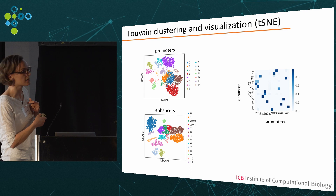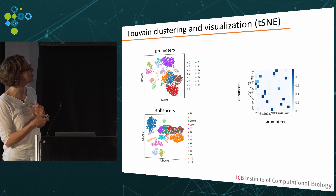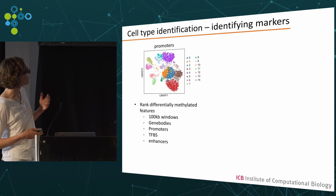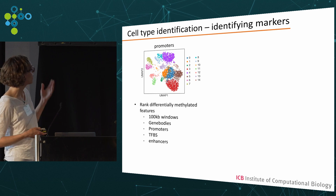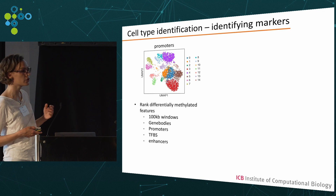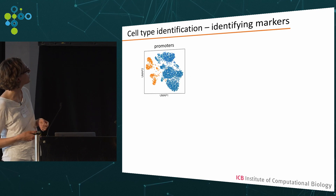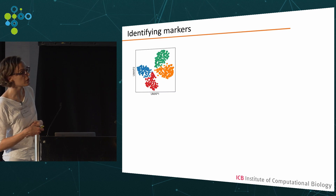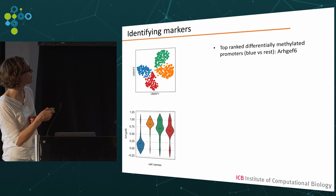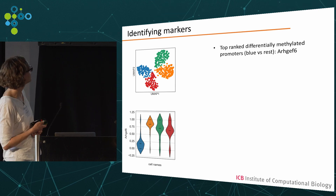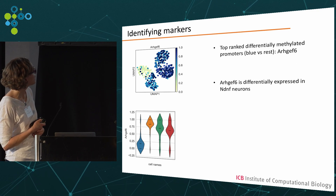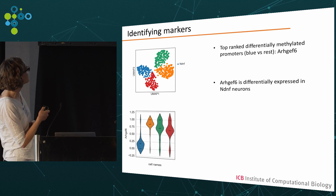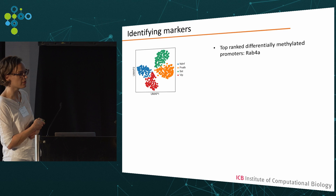If we compare which cells are assigned to which cluster depending on the features, we can see in a heatmap that in general, cells are assigned to the same group no matter what feature space we are using. To identify what these cells are, we run differentially methylated features between clusters. We can do it based on any feature space, but we choose promoters because they are easier to interpret. For example, for the blue cluster, the most differentially methylated promoter corresponds to the gene ARHGF6, which turns out to be differentially expressed in NDNF neurons. From that, and many other genes, we can assign the blue cluster to that neuron type and do the same for the others.